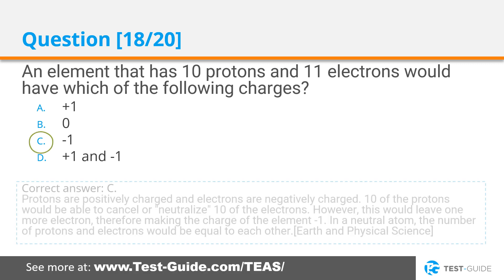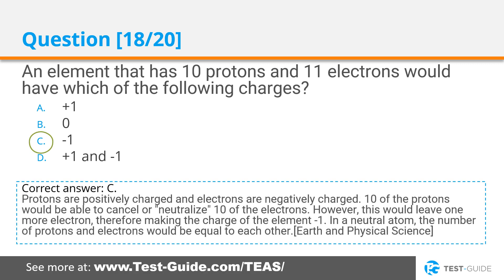Correct answer C. Protons are positively charged and electrons are negatively charged. 10 protons would be able to cancel or neutralize 10 of the electrons. However, this would leave one extra electron, therefore making the charge of the element negative one. In a neutral atom, the number of protons and electrons would be equal to each other.